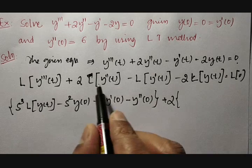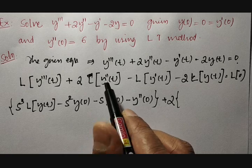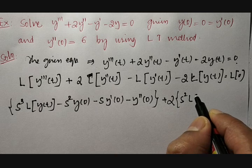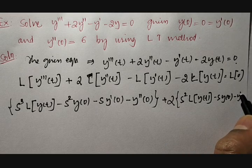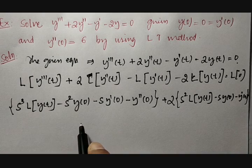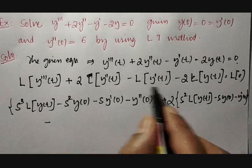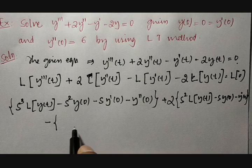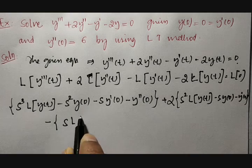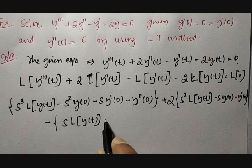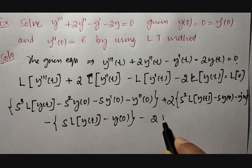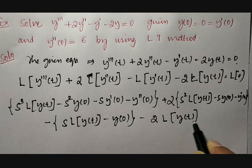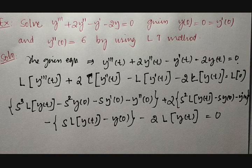Then 2 times the Laplace transformation of y double dash of t, which is second order, starts with s squared: s squared times L{y(t)} minus s times y(0) minus y dash(0). Similarly, minus the Laplace transformation of y dash of t, single order, starts with s: s times L{y(t)} minus y(0). Then minus 2 times L{y(t)}, all equal to 0, since Laplace transformation of 0 is equal to 0.